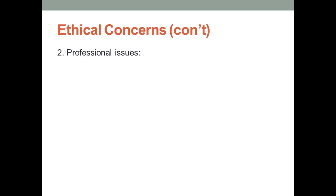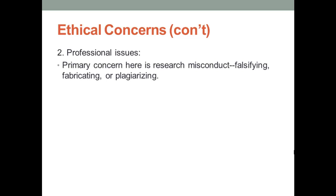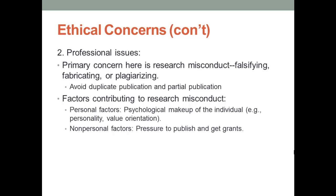The second area of concern is in the realm of professional issues. The primary ethical concern here is fraudulent activity — that is, fabrication or alteration of results by scientists. Obviously, cheating or lying are never defensible. There are two types of publication issues to avoid. Duplicate publication means publishing the same data and results in more than one journal or other publication — this should be avoided. Partial publication involves publishing several articles from the data collected in one study; this is sometimes allowable as long as the different publications involve different research questions and different data and facilitate scientific communication; otherwise, it too should be avoided.